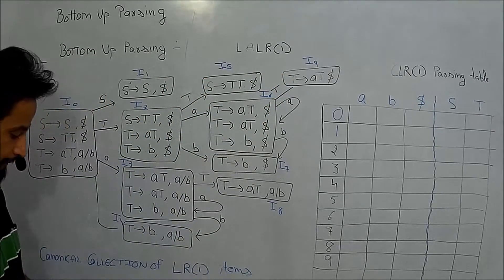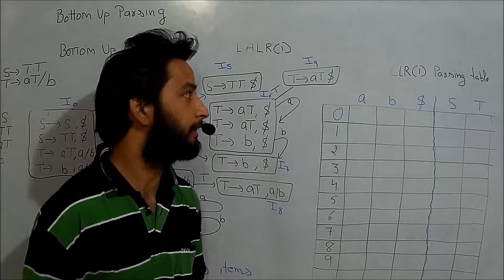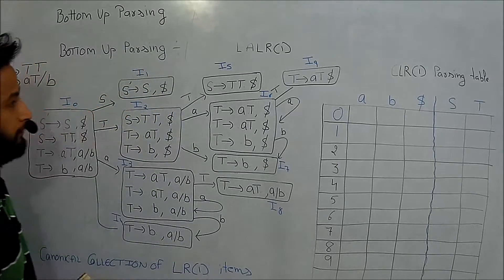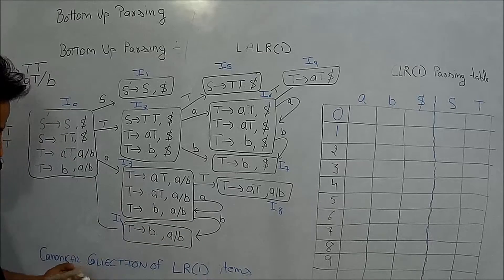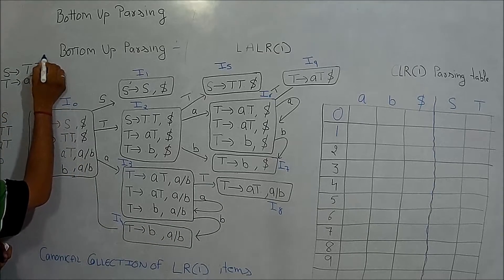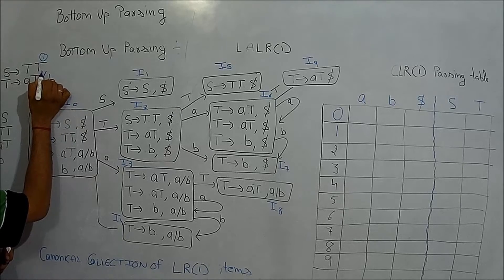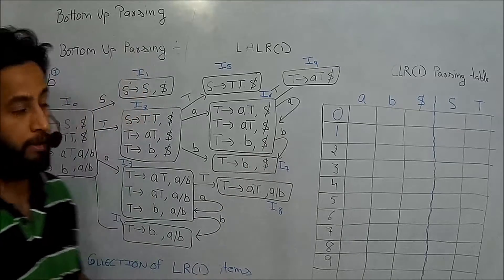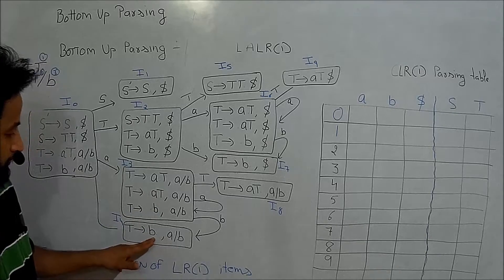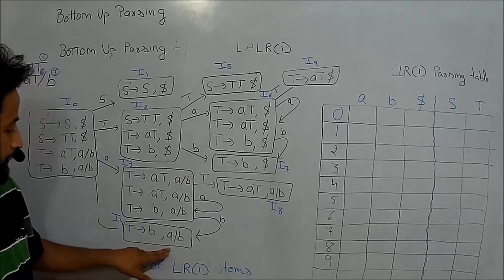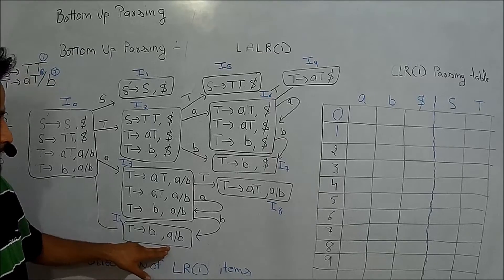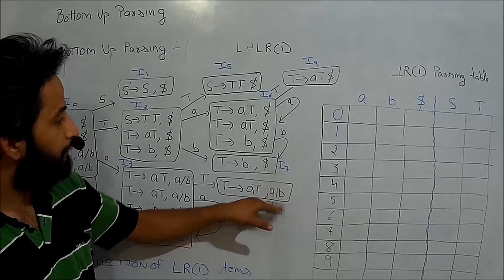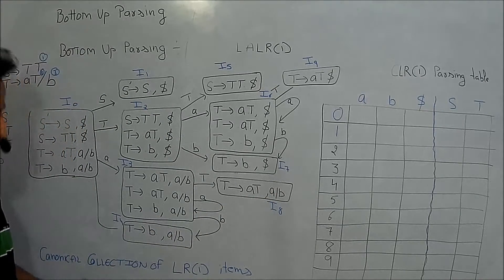The only difference between CLR1 and SLR1 is the reduce move placement. Before placing the reduce move, I will give the productions numbering: number 1, number 2, and number 3. In the CLR1 parsing table, I will place the reduce move under the lookahead symbol — for example, under lookahead symbols a and b.